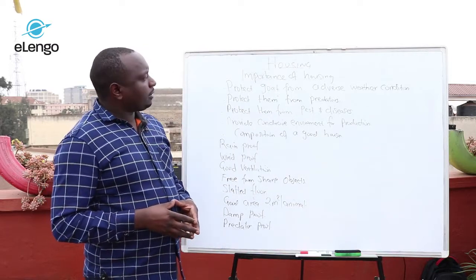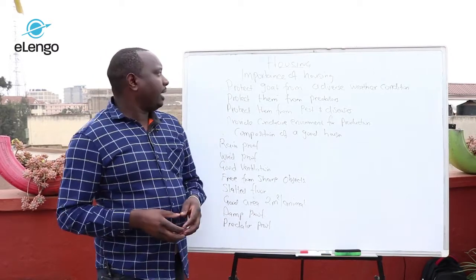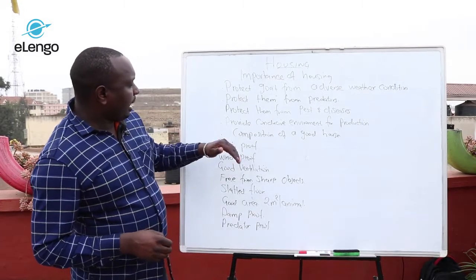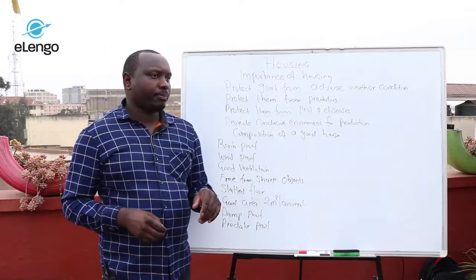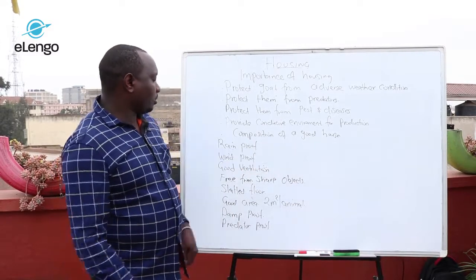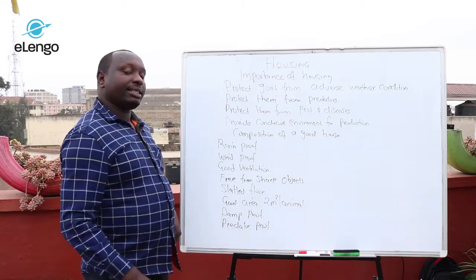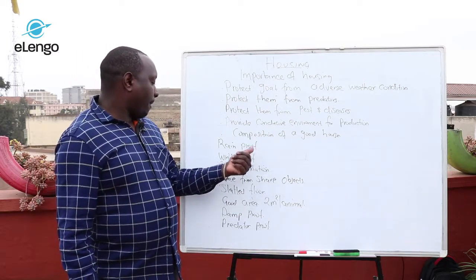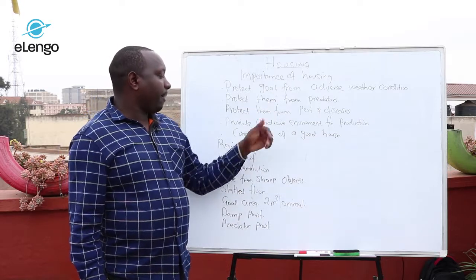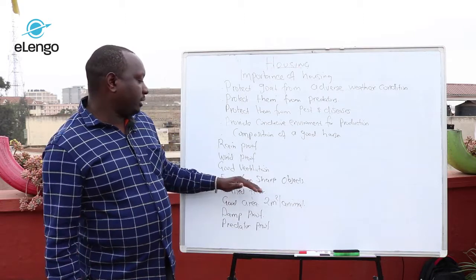The factors to consider when setting up a goat house include: first, the house should be rain-proof — no rain should be able to enter the house, as rain will cause dampness inside. Another factor is wind. We said that wind is an enemy to goats because it causes or predisposes goats to pneumonia.